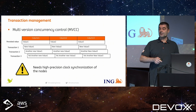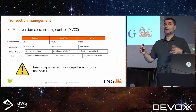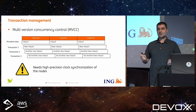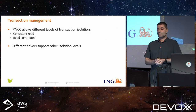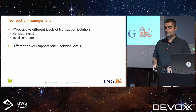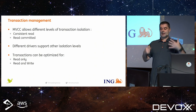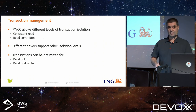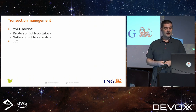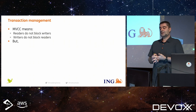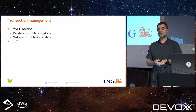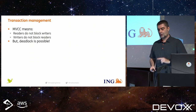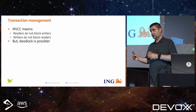Note the difference: in VoltDB we spread transactions across multiple single-threaded partitions, whereas in NuoDB we can have concurrent transactions in parallel trying to modify one record. MVCC allows different levels of transaction isolation — for example, consistent read or read committed — and different drivers support different isolation levels. Transactions can also be optimized for read-only or read-write, which is a nice feature not available in all NewSQL databases. Importantly, with MVCC, readers do not block writers and writers do not block readers. However, deadlock is now possible — unlike in VoltDB.